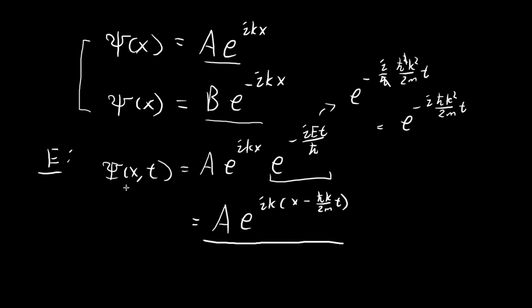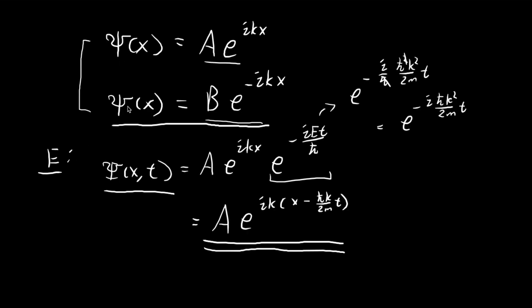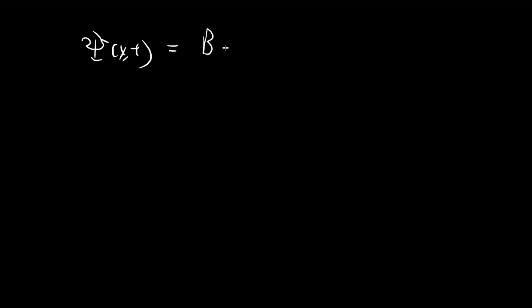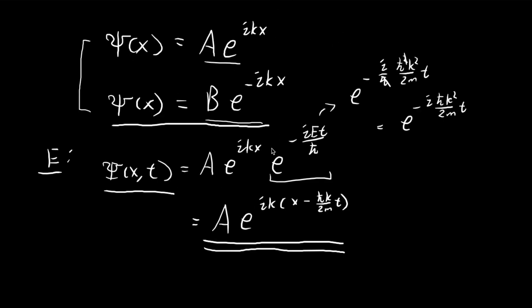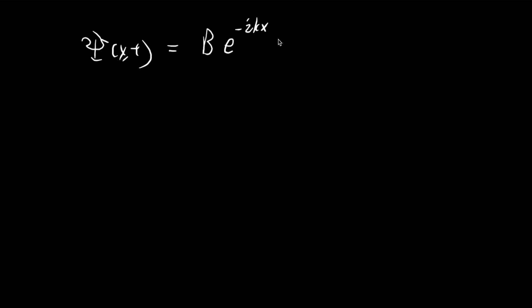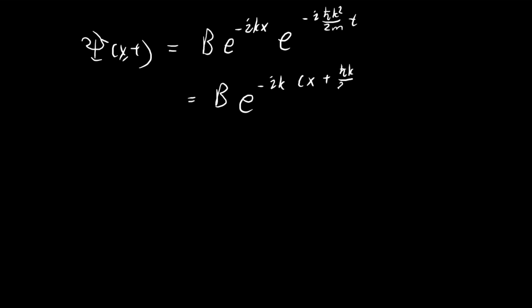So this is one possible wave function: Ψ(x,t) can equal A·e^(ik(x − ħk/(2m)·t)). Another possibility is to use the second expression. So our wave function for energy level E can also equal some constant B times e to the power of negative ikx, multiplied by φ(t), which gives e to the power of negative i·ħk²/(2m)·t. Grouping terms in the exponent, we get negative ik times (x + ħk/(2m)·t).